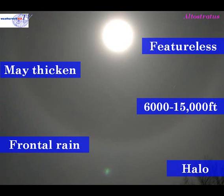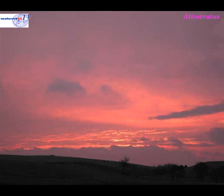Alto stratus cloud is easier to identify once a halo forms around the moon or the sun. The direction from which that halo breaks generally is the direction from which cloud is coming from. However, alto stratus cloud needn't be associated with rain. It may just be associated with a patch of medium level instability in the atmosphere. It can produce some spectacular sunset effects as well.